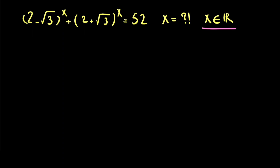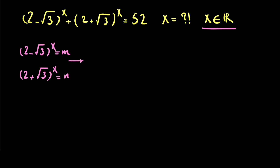For the first step, I want to call (2 minus the square root of 3) to the power of x as m, and (2 plus the square root of 3) to the power of x as n. So what will happen if I multiply m by n? The answer will be equal to (2 minus the square root of 3) to the power of x times (2 plus the square root of 3) to the power of x.